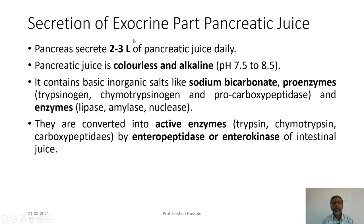Pancreatic juice is colorless and alkaline, with a pH ranging from 7.5 to 8.5. It contains basic salts like sodium bicarbonate, inactive enzymes called proenzymes — such as trypsinogen, chymotrypsinogen, and procarboxypeptidase — and also active enzymes including lipases, amylases, and nucleases.